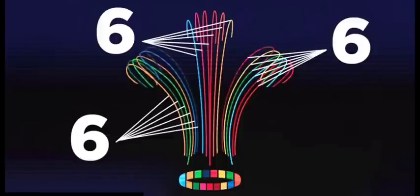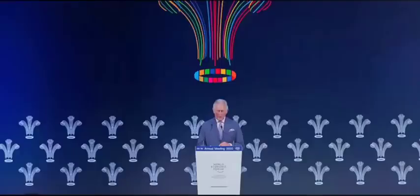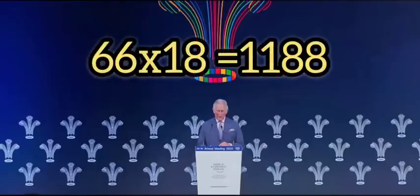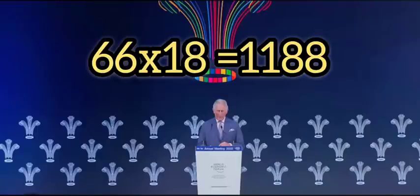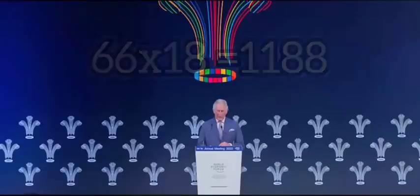But then there's 18 in total, so if you do the math, there is a total of, if you do 66 times 18, that's how many crowns there are here, that's a total of 1188, 1,188 stems standing behind King Charles.